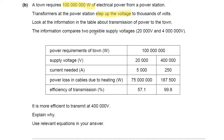The information compares two possible supply voltages: 20,000 volts in the left-hand column, or 400,000 volts. It's more efficient to transmit at 400,000 volts — explain why, using relevant equations in your answer. Although it's not a calculation, you need to use relevant equations, so find the two equations relevant to this question. It's a 3 mark question, so take your time and make sure you write three clear points. Pause the video and have a go.